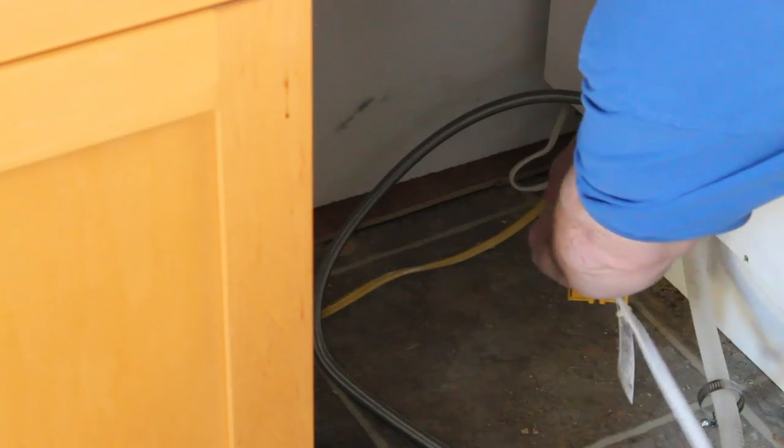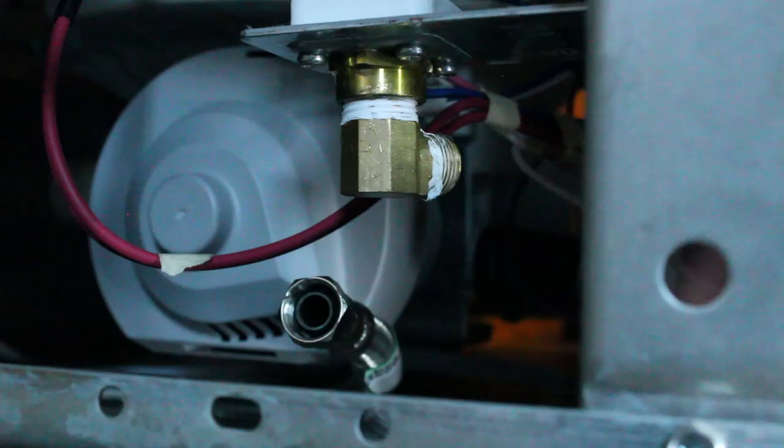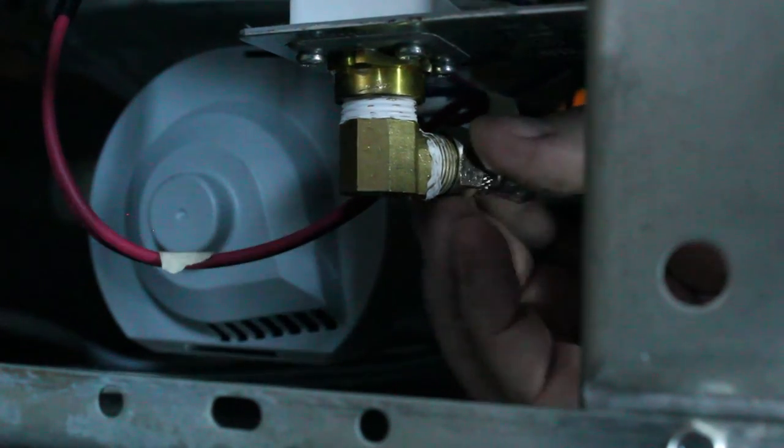Plug the dishwasher back into mains power and slide it back into position, or at least within range of your drain line. Reattach the water supply line.